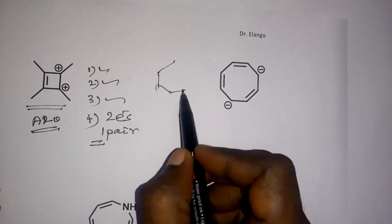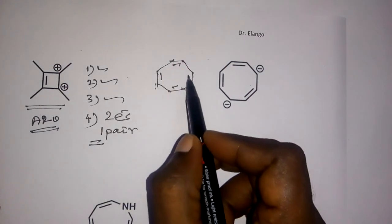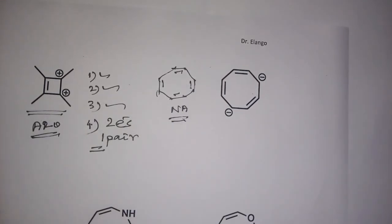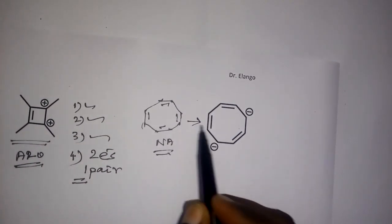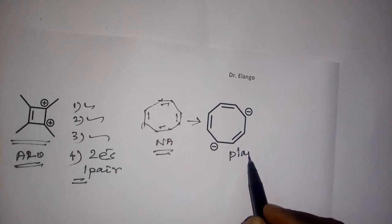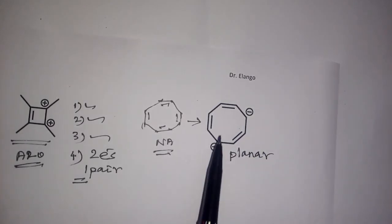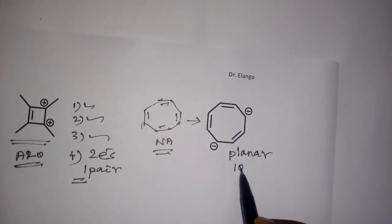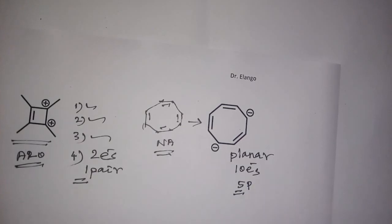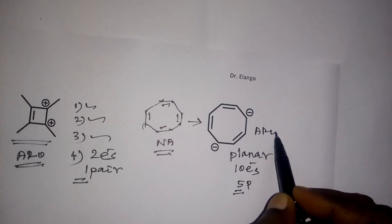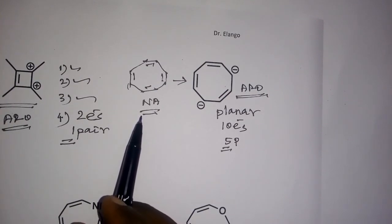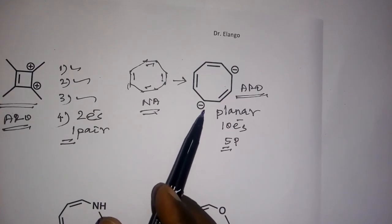Cyclooctatetraene is non-aromatic because it is tub-shaped and non-planar. However, if we prepare the corresponding dianion, it becomes planar. Counting pi electrons: three pi bonds give six electrons, plus four electrons from the two negative charges, totaling ten electrons — five pairs. Five is an odd number, so this cyclooctatetraene dianion is aromatic.